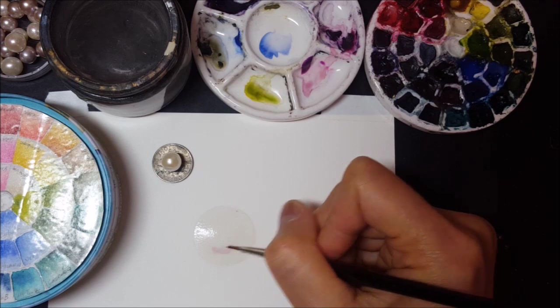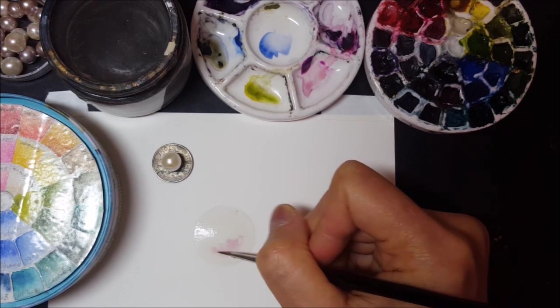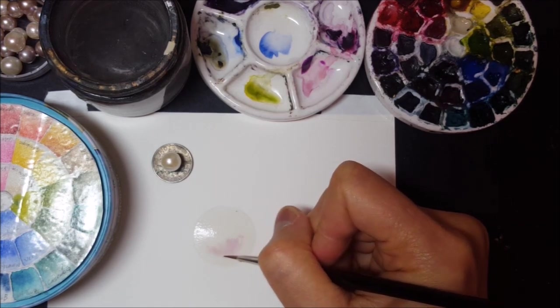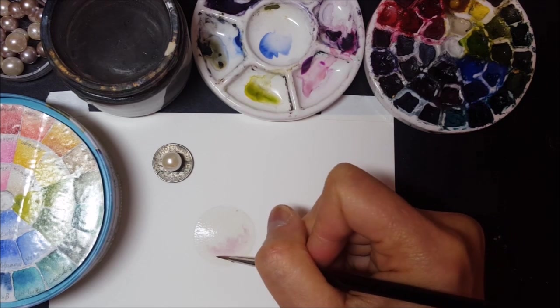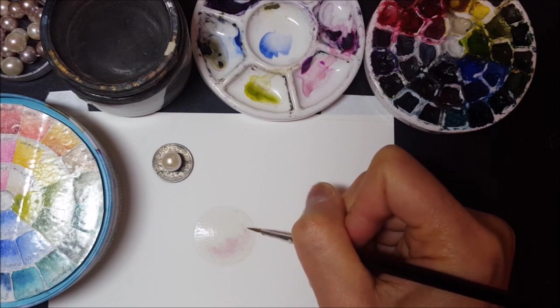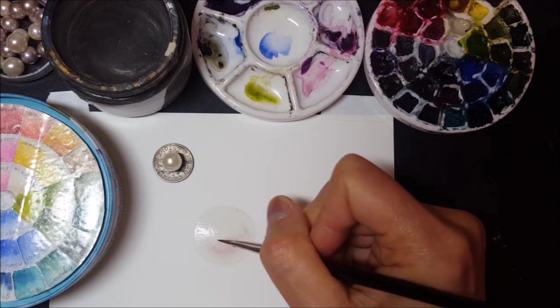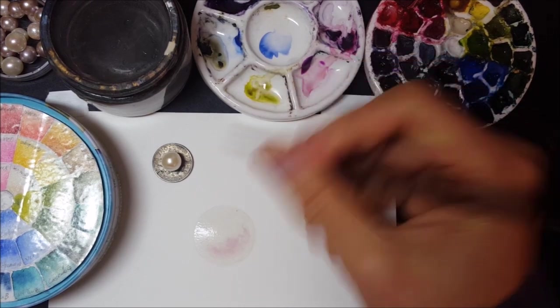Starting with some of this pink. And I'm going to paint that along this lower part. This is wet on wet. So it bleeds a little bit, which is great. That's what I want. A little bit of green.